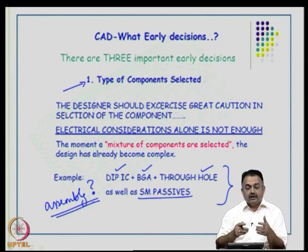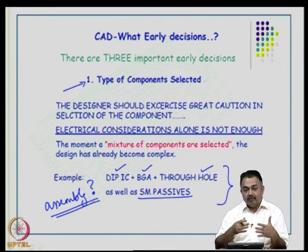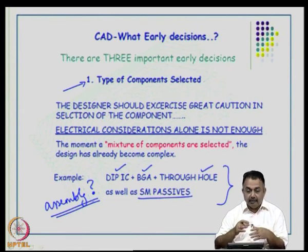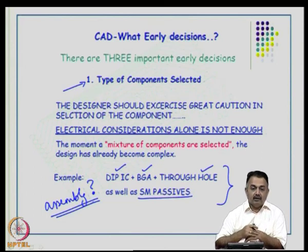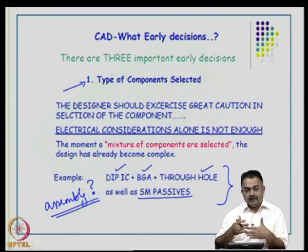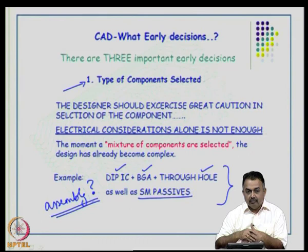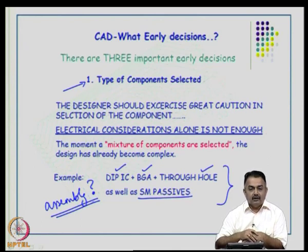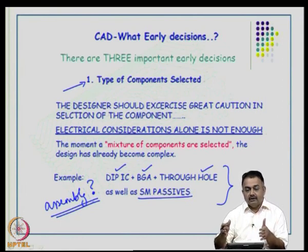After PCB fabrication, board assembly completes the design. You may have a complete through-hole assembly, a complete surface-mount assembly, or a mixture. A mixture of component types subjects the board to various assembly processes and thermal shocks, which can cause failures in the final product. Avoiding this at the design stage is essential.